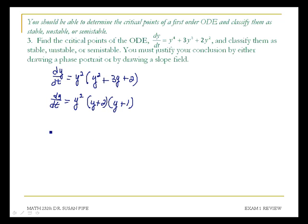If I set my derivative equal to 0, I'll be able to solve for my critical points. We get critical points whenever the factors are equal to 0. We're going to get y equals 0 from this first factor. If y plus 2 is equal to 0, I'm going to get y equals negative 2. And if y plus 1 is equal to 0, I'm going to get y equals negative 1. So these are my critical points.